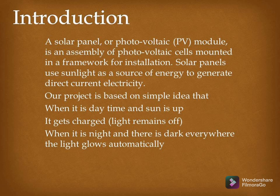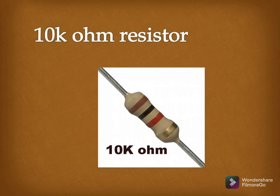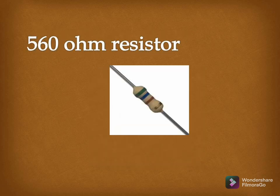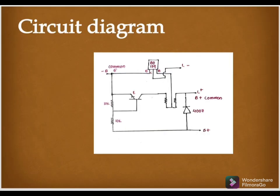When it is daytime and the sun is up, the panel gets charged while the light remains off. When it is night and dark everywhere, the light glows automatically. We made use of some transistors, 10 kilohm resistors, 10 ohm resistors, a 560 ohm resistor, and a BD139 transistor. This is the block diagram, and now my friend Pratiksha will explain how she made this amazing project.